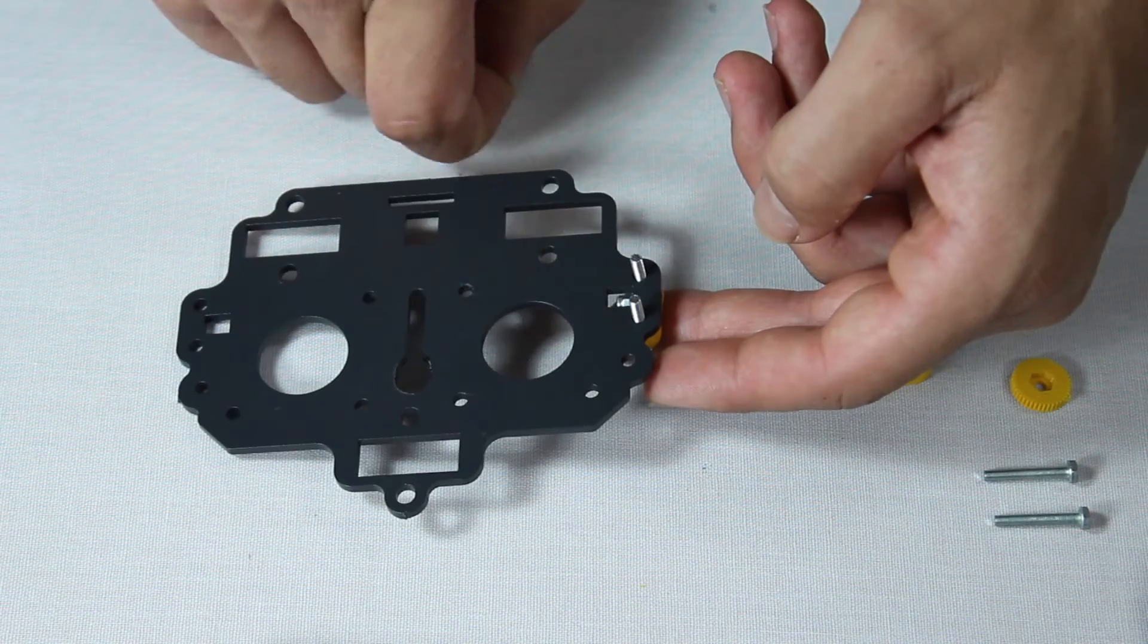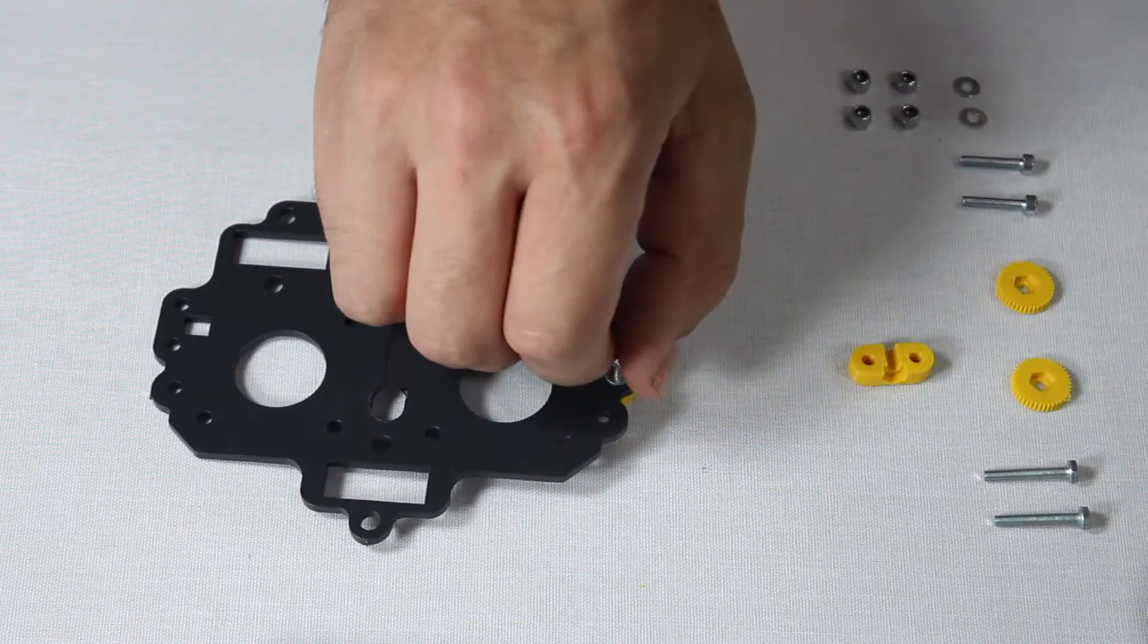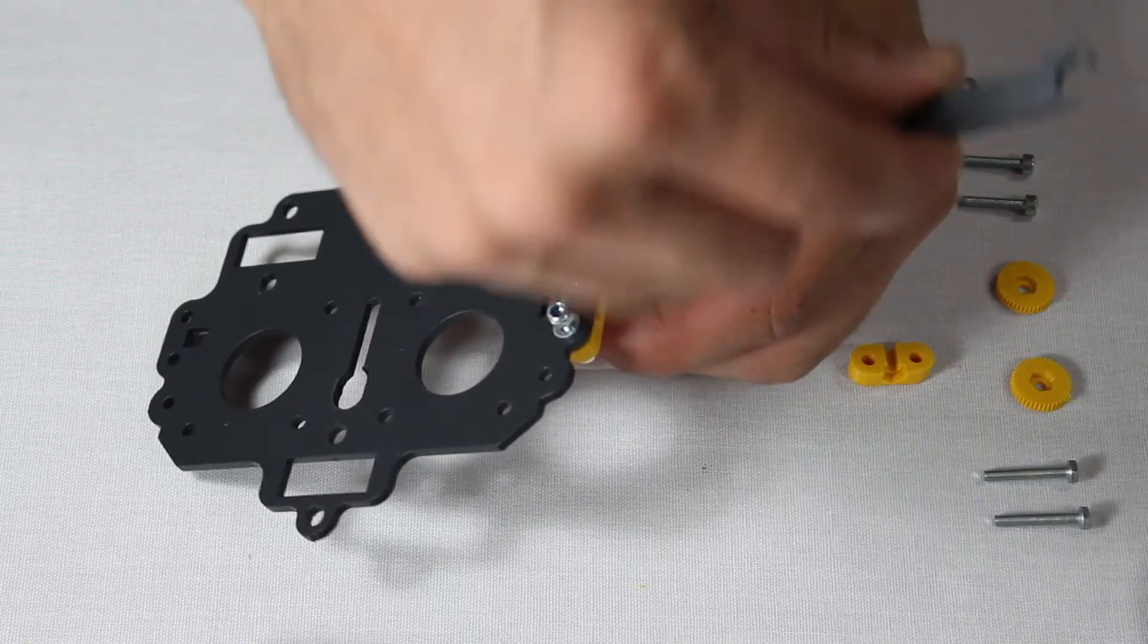The printed parts are then screwed on, and don't forget the washers before applying the nuts. You can use the spool holder to tighten the nuts.